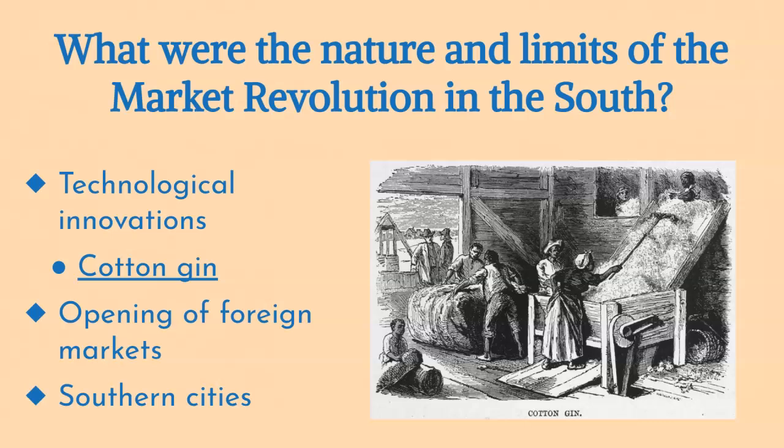Unlike the North, Southern state governments invested very little in internal improvements such as roads, canals, and railroads, which limited the potential for a transportation revolution. As a result, transportation networks were less developed, and southern cities served primarily as depots for plantation crops rather than centers of economic and industrial growth. Cities like New Orleans, Charleston, and Baltimore were important for transporting crops, but even these southern hubs were often bypassed. Instead, staple crops like cotton were shipped directly from southern plantations to northern cities like New York City, which handled international trade.